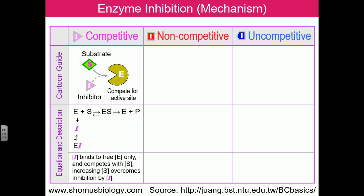The inhibitor binds to the free enzyme only. Once the enzyme is attached to substrate and the enzyme-substrate complex is formed, the inhibitor can no longer bind. This inhibitor competes with the substrate, and if we increase the substrate concentration, the inhibitor will not win — higher substrate concentration will outrun the inhibitor's ability to bind the enzyme. So we can actually reverse the attachment of the enzyme with the inhibitor.